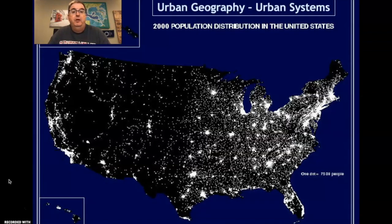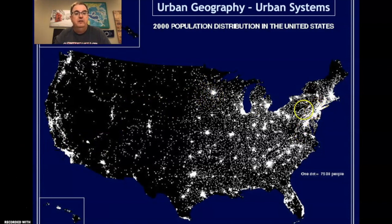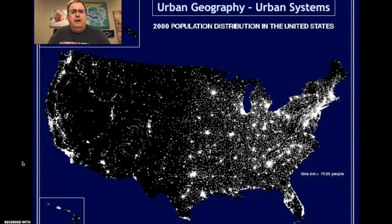Here's an urban systems map — we need to be able to look at it. It would be nice to know that this is Minneapolis, this is New York, Denver is over here, and LA is down here. This will help your responses. This is a geography class, and if you write an entire essay without mentioning anything specifically about a geographic location, you might not be in the top pile. Make sure you know some of these big city locations.